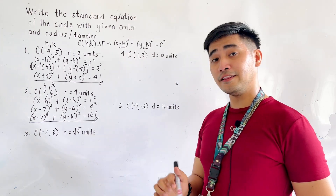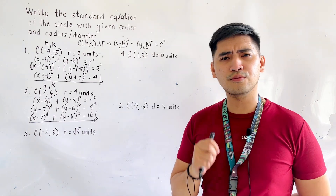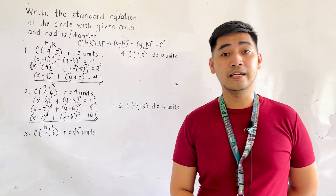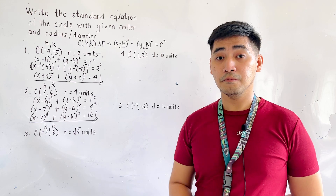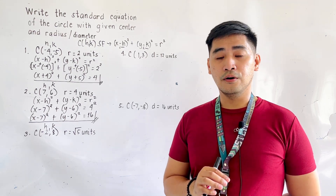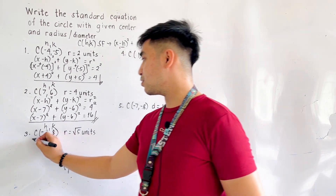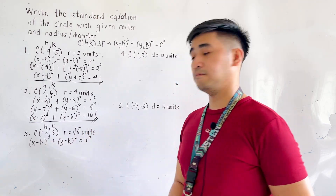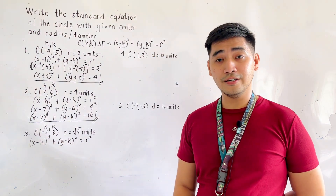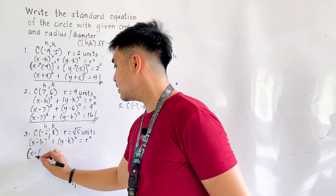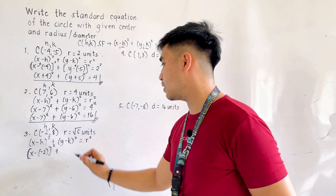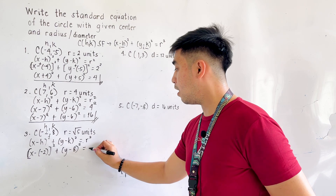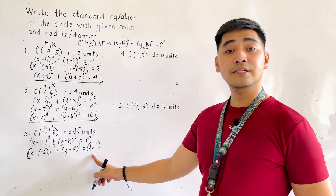For the third example, we are given center located at (negative 2, positive 8), and the radius is equal to the square root of 5 units. Here h is negative 2 and k is 8, but for the radius we are given a radical — square root of 5 units. Writing the equation: x minus h, quantity squared, plus y minus k, quantity squared, equals r squared. Substituting, we get x minus negative 2, quantity squared, plus y minus 8, quantity squared, equals square root of 5, squared.